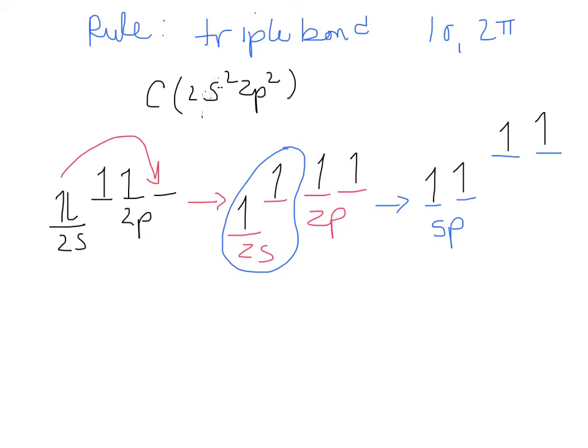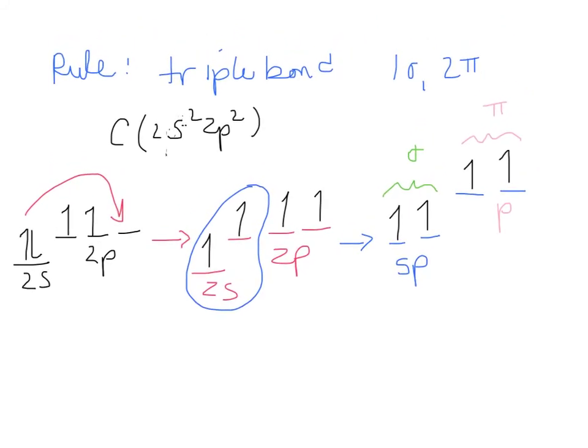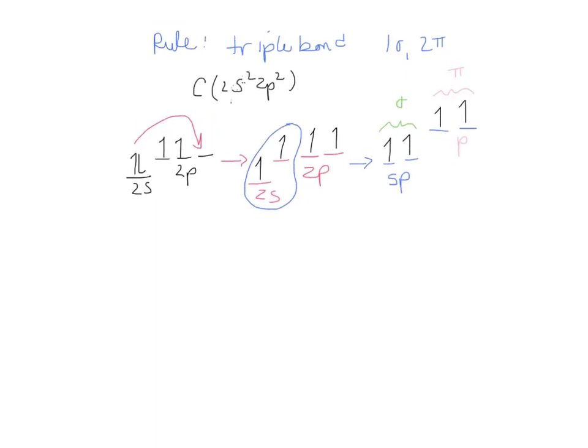And so the two SP hybrid orbitals will make the sigma bond, and then the two unhybridized P orbitals are going to make the pi bond. Now you're going to put it all together.